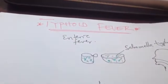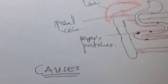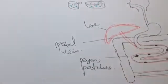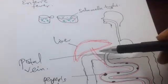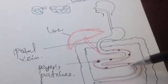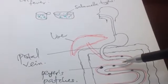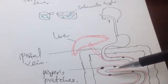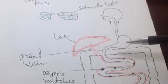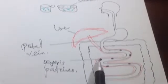Before we dive deeper into the causes, we need to understand the anatomy. When we eat food, it goes to the stomach first, then to the intestine — the duodenum and beyond. In the wall of the intestine there are structures called Peyer's patches, which contain macrophages, B cells, and T lymphocytes — immune cells that are very important in fighting bacteria we eat in food.